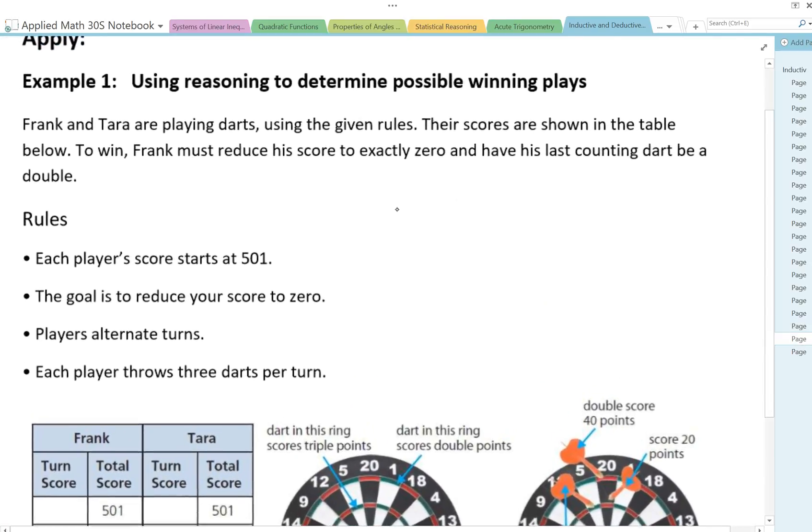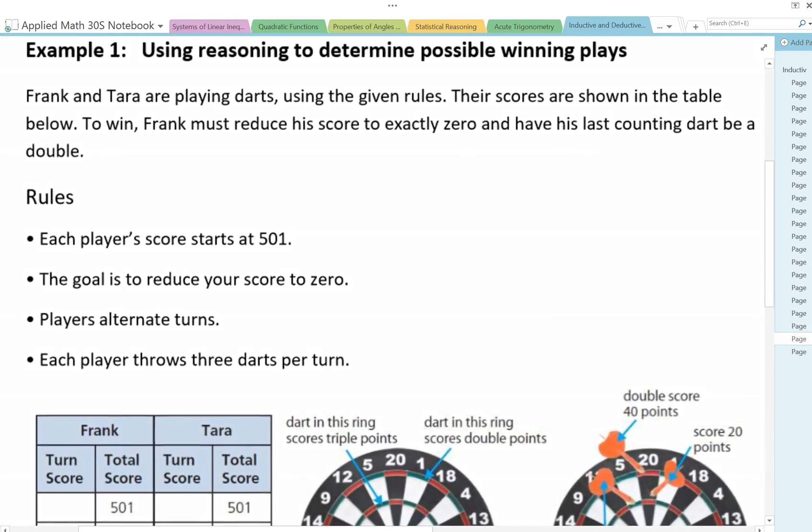Here we go. So Frank and Tara are playing darts using the given rules. Their scores are shown in the table below. To win, Frank must reduce his score to exactly zero and have his last counting dart be a double.